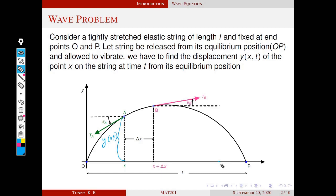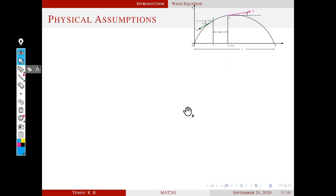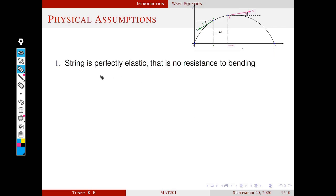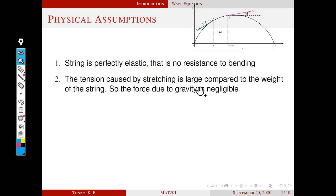If you choose another point, the corresponding displacement is that height — that height is the displacement y. We consider a simple wave problem and will solve it using several assumptions, which form the foundation for more relaxed wave problems. The first assumption is that the string is perfectly elastic, meaning no resistance to bending. The tension caused by stretching is large compared to the weight of the string, so the force due to gravity is negligible and the motion of the string is completely controlled by tension.